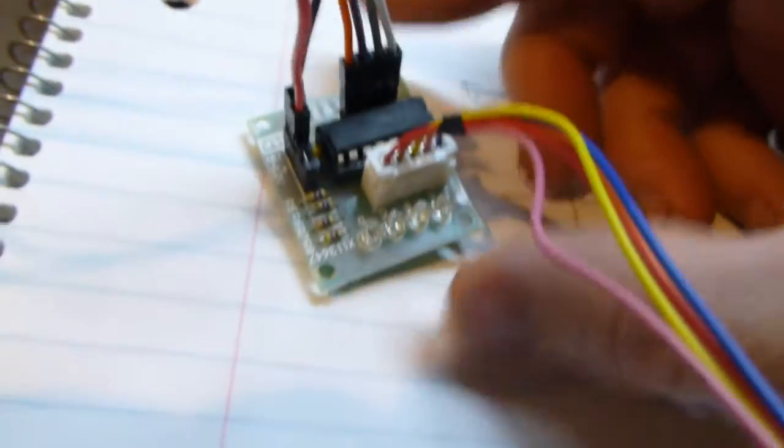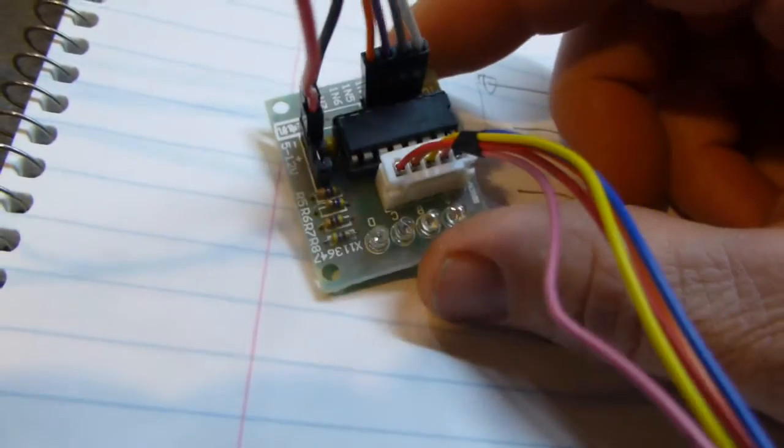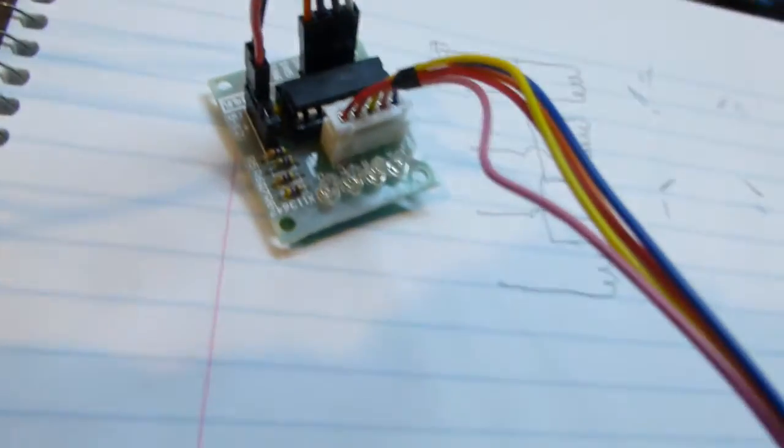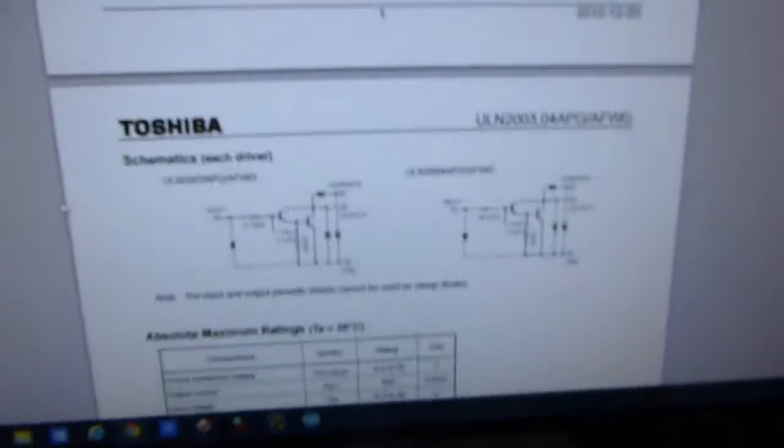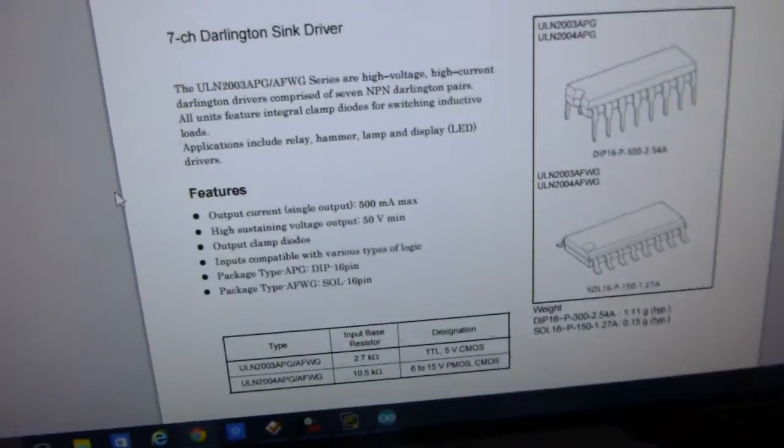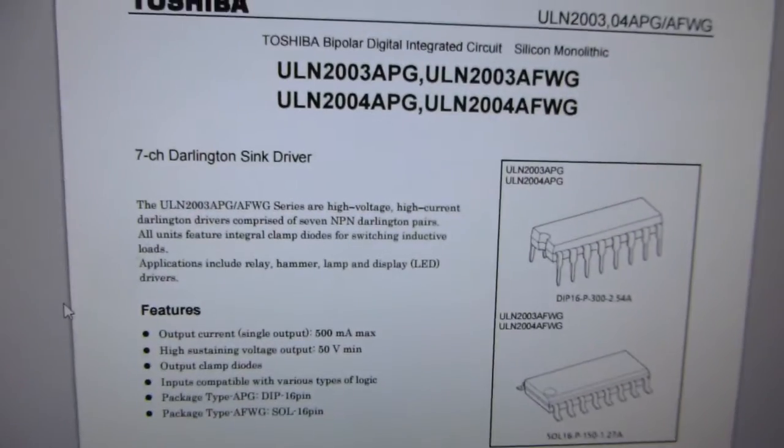Anyway, this board here, when I looked up the chip number, it's a ULM 2003, I think, something like that. Basically, let me see if I got it up here. There's really not much to it. No, there it is. 2003 APG.